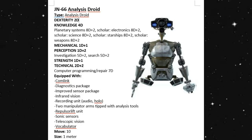It is equipped with Comlink, it has a diagnostics package, we have an improved sensor package, we have infrared vision, a recording unit which includes audio and holo, two manipulator arms tipped with analysis tools, a repulsor lift unit, sonic sensors, telescopic vision, and a vocabulator so it can speak to most humanoids. It has a base movement of 10, so it's our galactic standard again, and it is only about one meter tall.